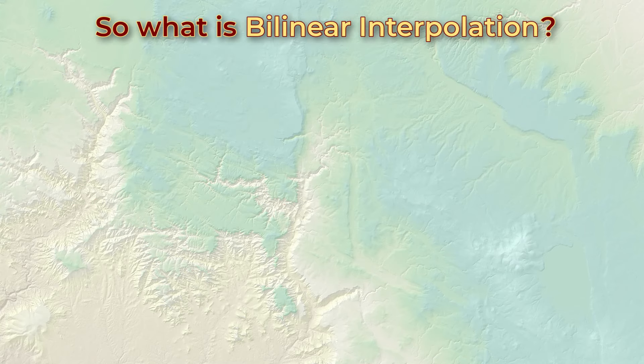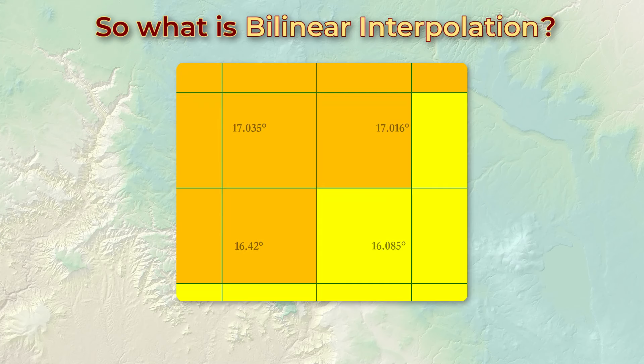So you start with a raster, and we use this raster of slope values in this example. We know the slope values in each of these four raster cells. We want to estimate the slope at this sample point. Now we could take the exact value of the cell, which is 16.085 degrees, and this is what the exact values option does.